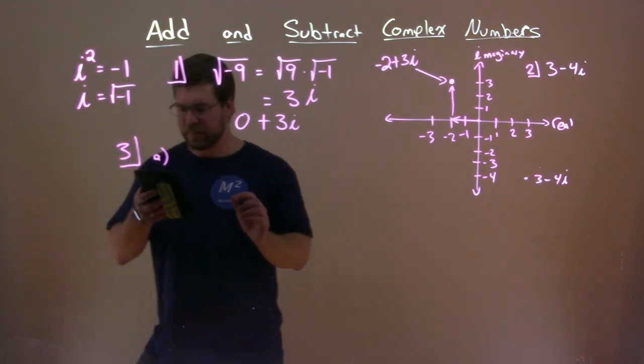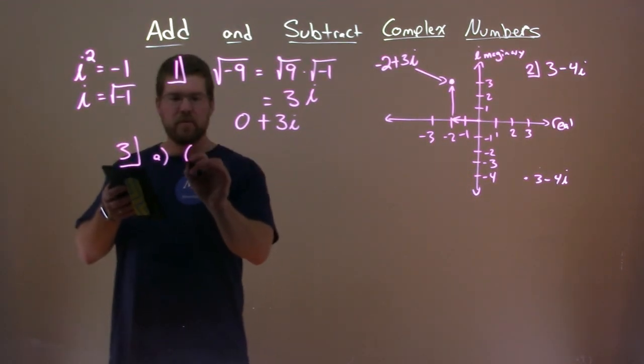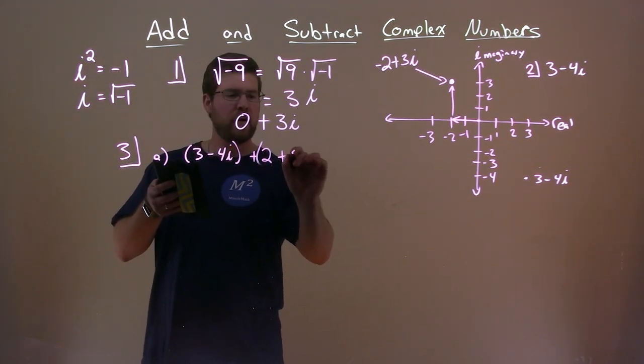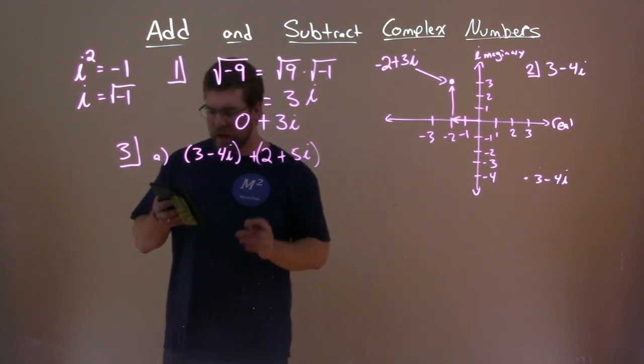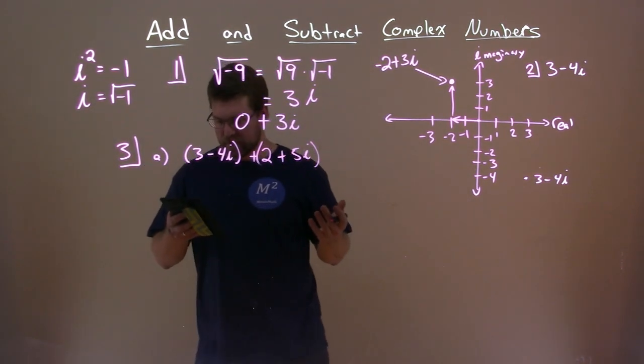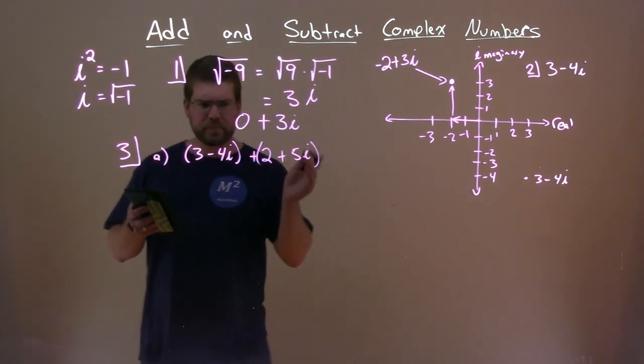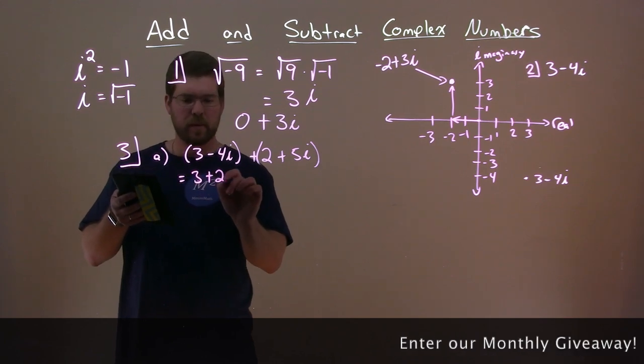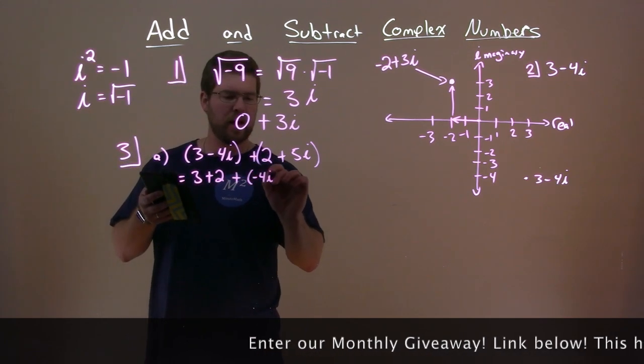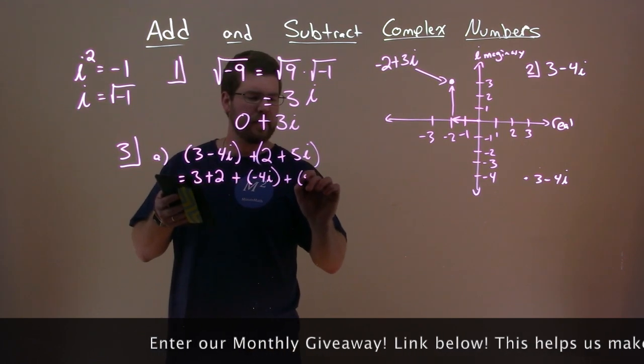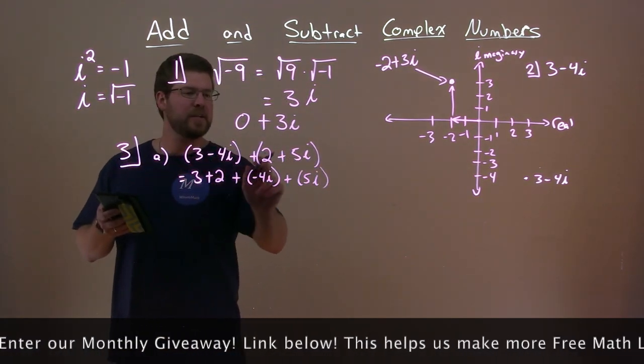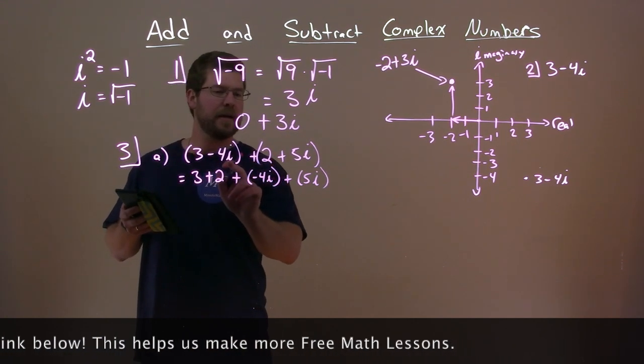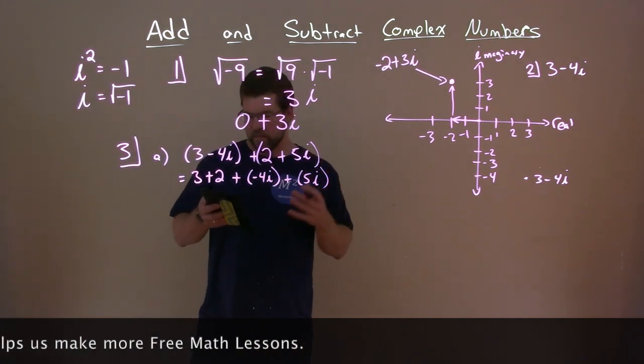So a, we're going to deal with adding here. We have (3 - 4i) + (2 + 5i). So we want to add the real numbers first and then the imaginary numbers or imaginary part together. So let's rearrange this. All right, we have 3 plus 2 comes first, plus we have negative 4i and then plus the 5i. So all I'm doing here is just rearranging each one of these parts.